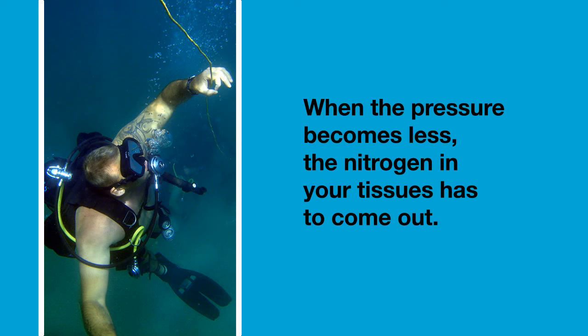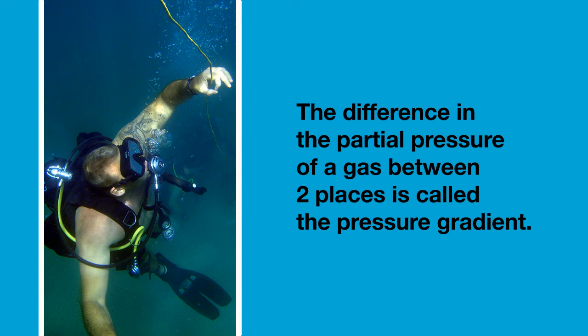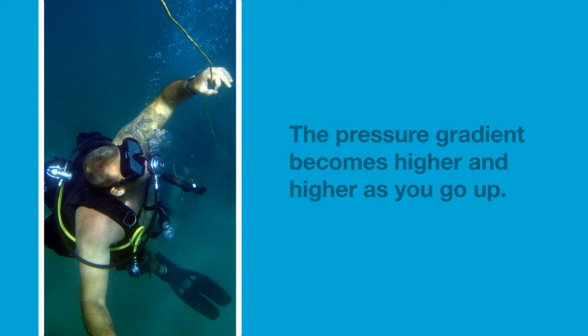When you go up again and the pressure becomes less, the nitrogen in your tissues has to come out again. The difference in the partial pressure of a gas between two places is called the pressure gradient. So the pressure gradient of nitrogen between your breathing air and your dissolved tissues becomes higher and higher as you ascend.